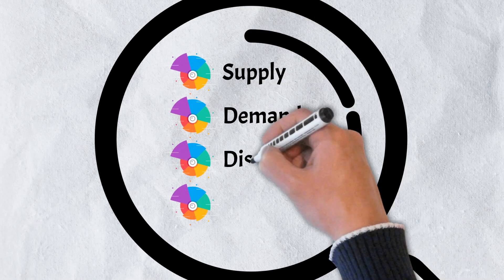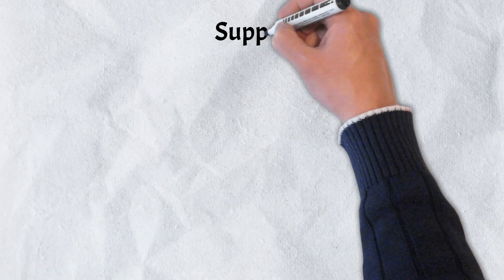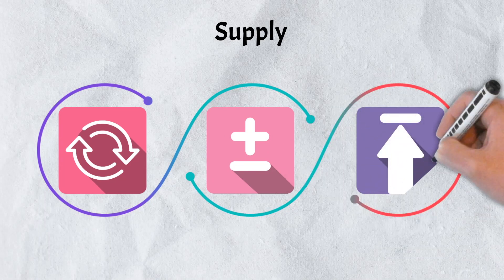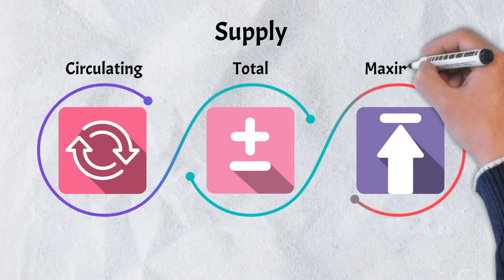Let's dive a little bit deeper into some of these factors, beginning with supply, demand, distribution, and allocation. The supply of a token is an essential element to consider while studying a crypto's tokenomics. There are three types of supply: circulating, total, and maximum supply.